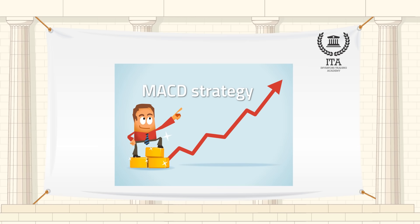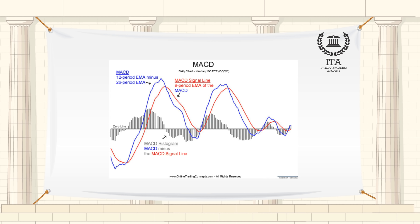The Moving Average Convergence Divergence, known as MACD, indicator fluctuates above and below zero, highlighting both the momentum and the trend direction of a stock.